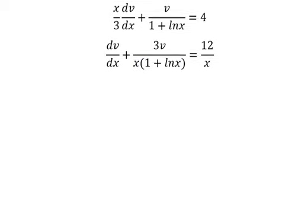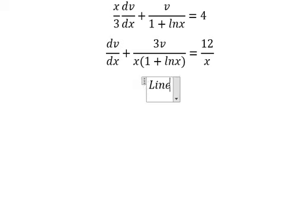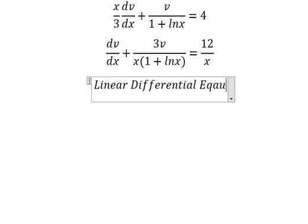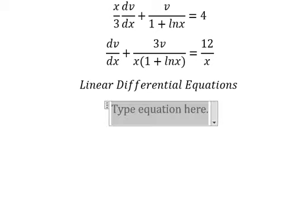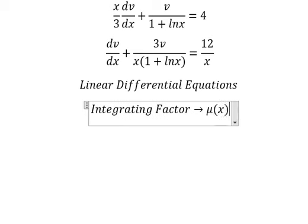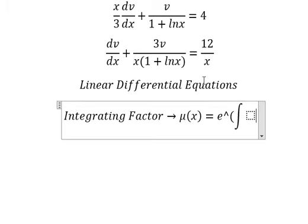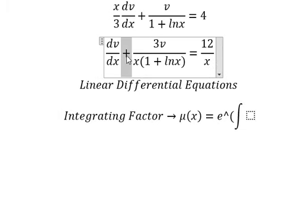Next, we have v and the first derivative of v. This is now a linear differential equation, so we need to find the integrating factor. We need to find mu of x, which is e to the power of the integral. We can see that the coefficient on the positive side is 3 over x, so we put everything into the integrating factor.